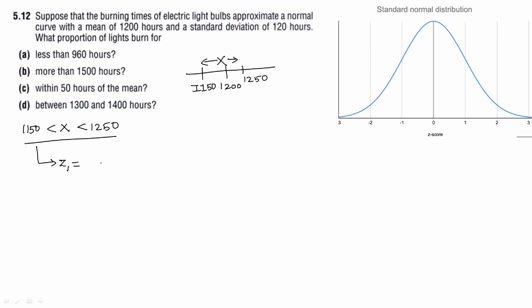For z1, we have 1150 minus 1200 over 120. For z2, x minus mu over sigma equals 1250 minus 1200 over 120. Simplifying, z1 equals negative 0.41 and z2 equals 0.41.